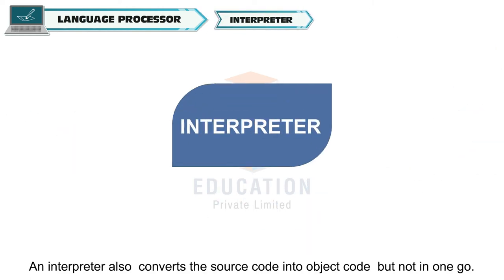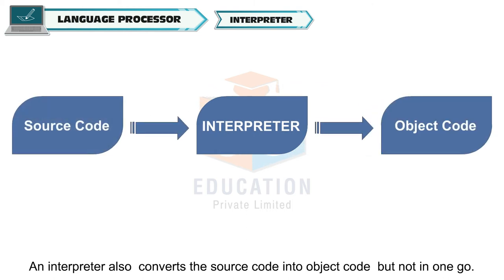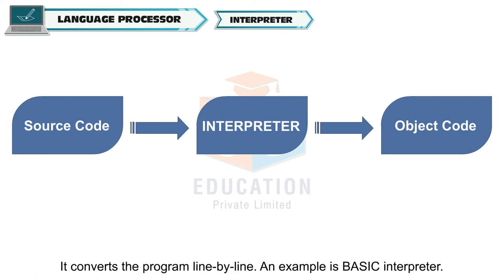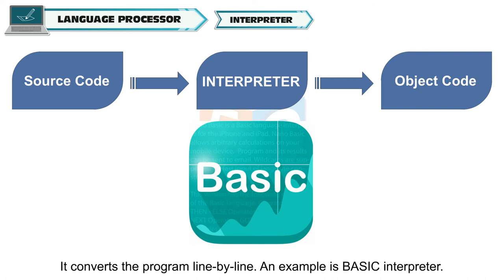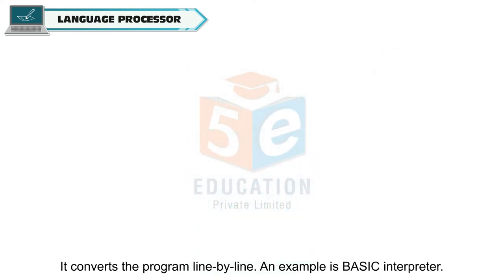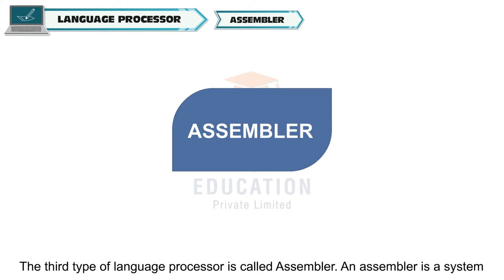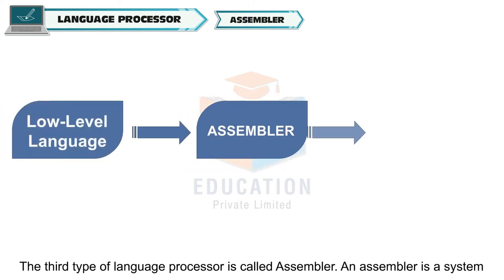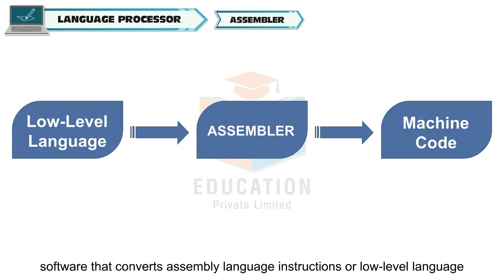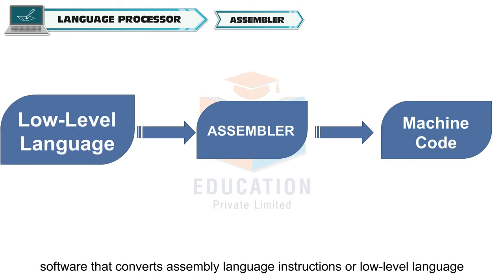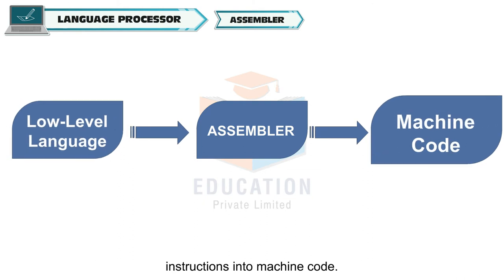An interpreter also converts the source code into object code but not in one go — it converts the program line by line. An example is basic interpreter. The third type of language processor is called assembler. An assembler is a system software that converts assembly language instructions or low-level language instructions into machine code.